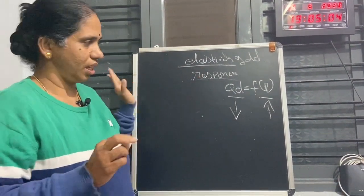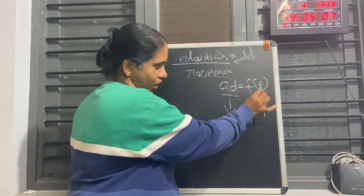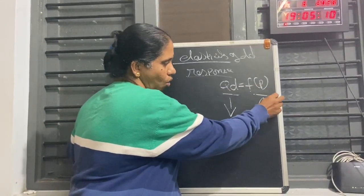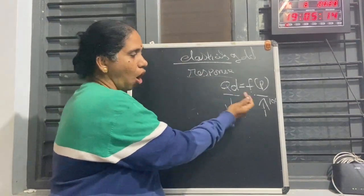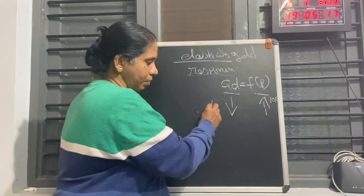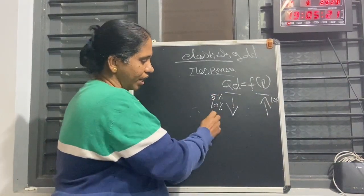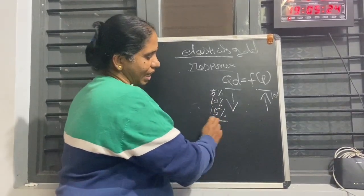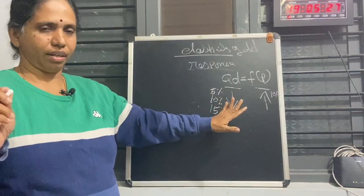We are going to see only the price elasticity. That is why I wrote Qd is equal to function of price. So if the price is increased by 10 percent, what will happen to the quantity demanded? Definitely it is going to decrease — but by how much? Will it decrease by the same 10 percent, or by 5 percent, or by 15 percent? This calculation we call the elasticity of demand — this is called the price elasticity.